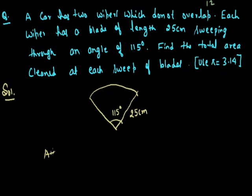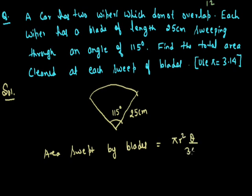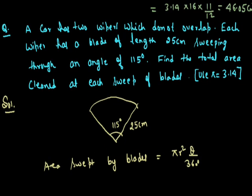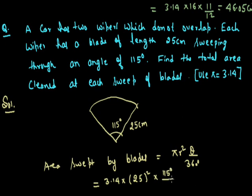Area swept by blades = πr²θ/360 = 3.14 multiplied by 25 squared multiplied by 115/360. By solving this we get 626.90 cm² for each blade.